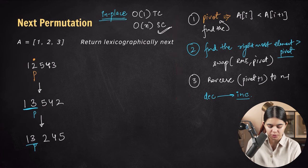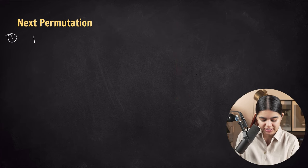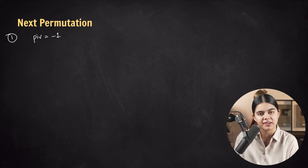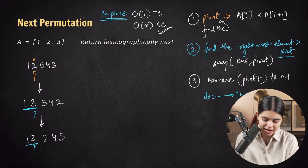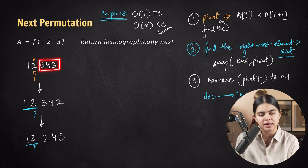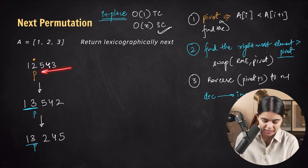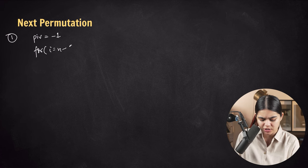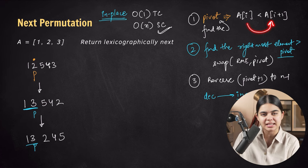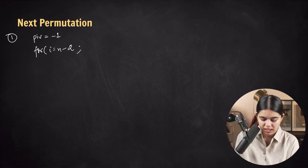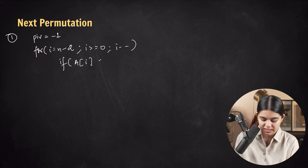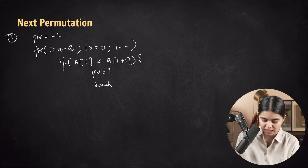Now let's convert to code. Step 1 — find the pivot: initialize pivot with minus 1, run a backwards loop from i equals n minus 2 down to 0. If array of i is less than array of i plus 1, we've found our pivot — set pivot equal to i and break. If pivot remains minus 1, the array is entirely in decreasing order.